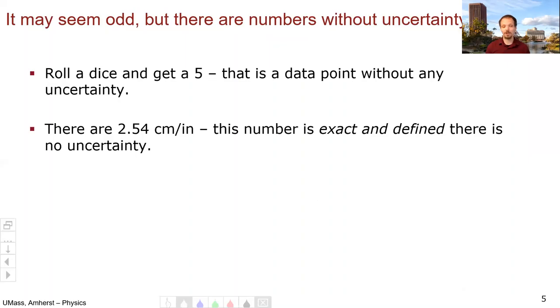Another example is the conversion factor between centimeters and inches. There are exactly 2.54 centimeters to the inch. This number is exact, defined. There is no uncertainty. In terms of sig figs, there are an infinite number of significant figures to that value. We'll actually encounter other such values in this course.